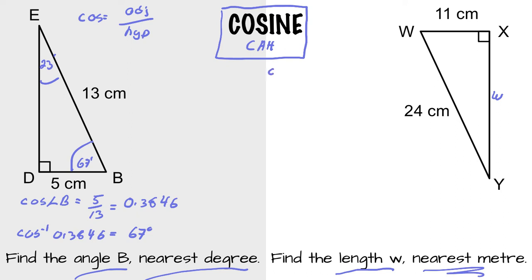So cosine angle W equals the adjacent compared to the hypotenuse, to 4 decimal places: 0.4583.